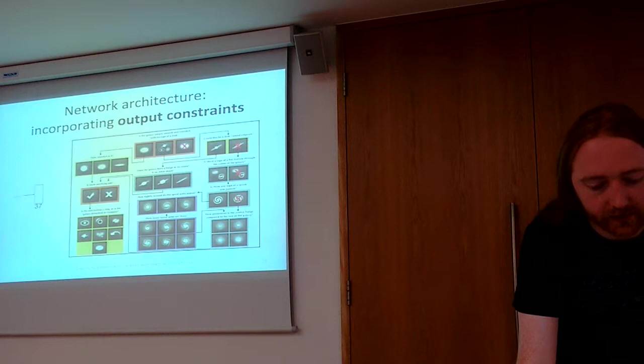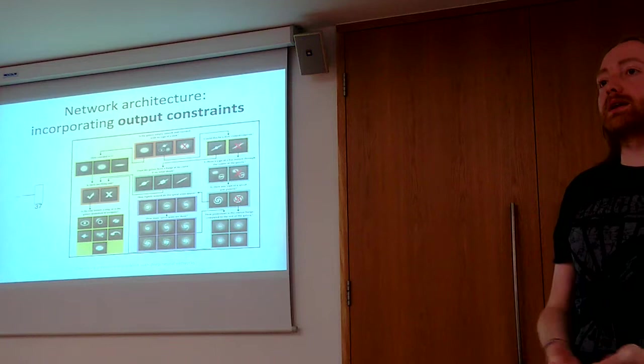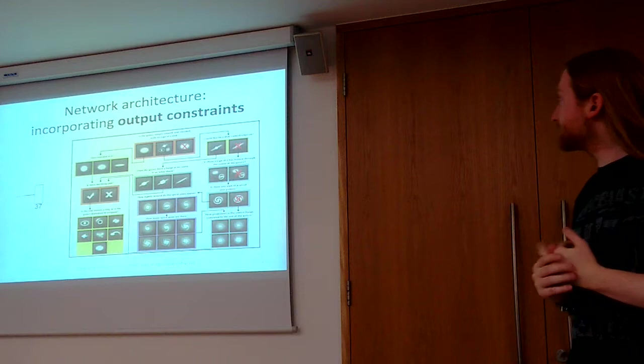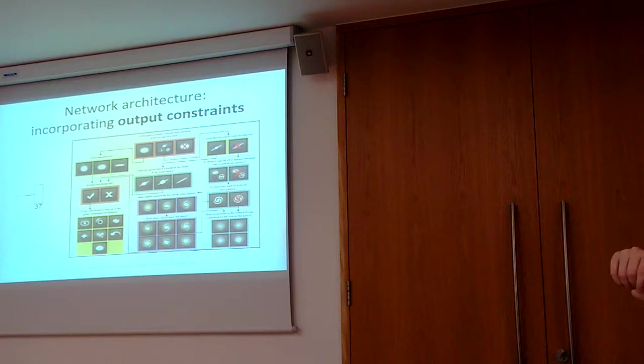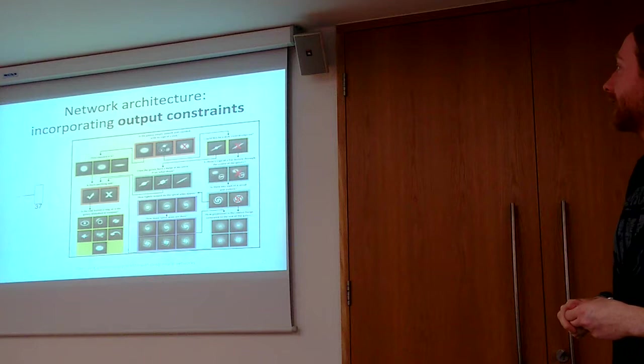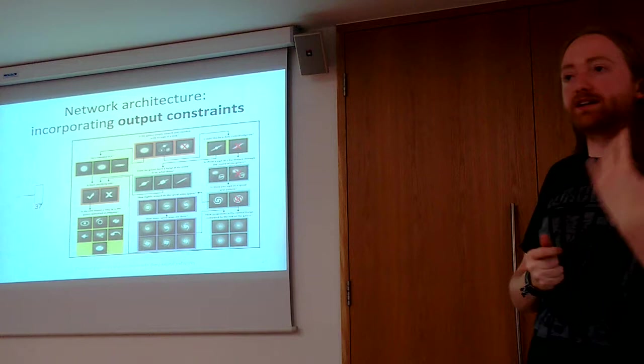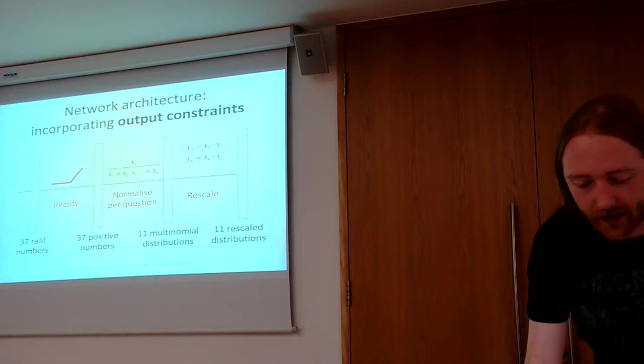And then the output layer is a linear layer that provides 37 numbers, and these are going to be converted into the probabilities that we have to predict. But it turns out that these probabilities adhere to certain constraints. So the probabilities of the answers to the question 'how rounded is it' should add up to the probability of the answer that this is a rounded galaxy, because this is the only way that this question has been asked. And all the answer probabilities in this tree follow these constraints - like the probabilities should always add up to the previous answer. And we can actually explicitly incorporate this into the network so that its predictions always adhere to these constraints.